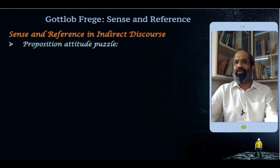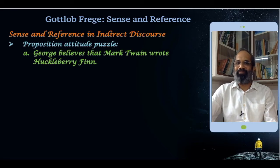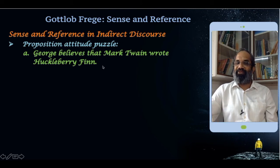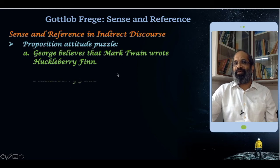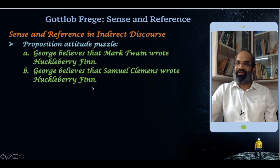Now, coming to what Frege calls the propositional attitude puzzle, or sense and reference in indirect discourse. We take the example: 'George believes that Mark Twain wrote Huckleberry Finn.' Huckleberry Finn is the novel and Mark Twain is the author. It is a true statement that Mark Twain wrote Huckleberry Finn. Another name for Mark Twain is Samuel Clemens — his true name is Samuel Clemens and his pen name is Mark Twain. So: 'George believes that Samuel Clemens wrote Huckleberry Finn.' Both are true — Mark Twain wrote Huckleberry Finn and Samuel Clemens wrote Huckleberry Finn.